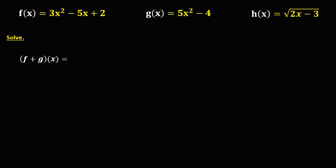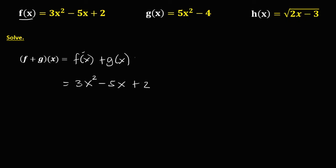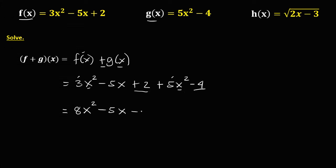For the operation of functions, this equation is equal to f(x) plus g(x). Add the two functions: from f(x), that's 3x² - 5x + 2, plus g(x), that's 5x² - 4. Combine like terms — terms with the same variable and exponent. For x²: 3 plus 5 is 8x². Bring down -5x. For the constants: 2 minus 4 is negative 2. So the sum of f(x) and g(x) is 8x² - 5x - 2.